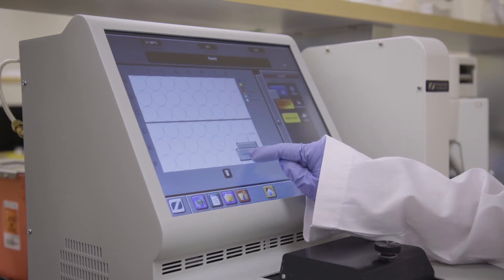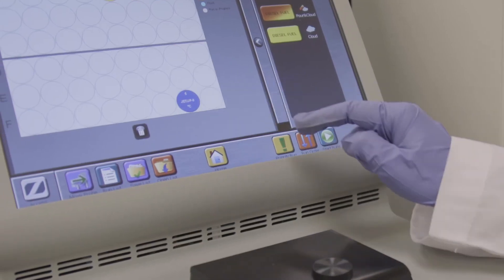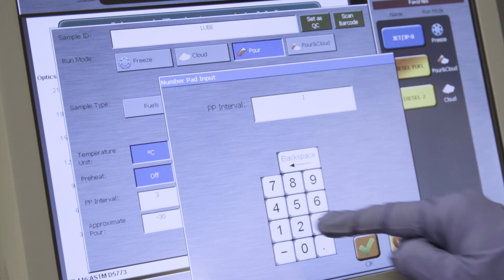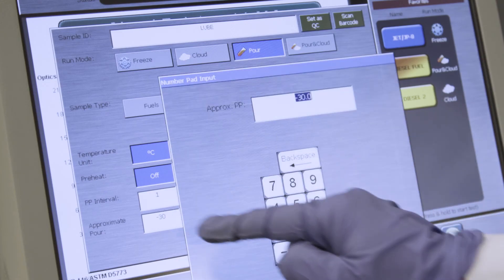Program test by dragging favorites buttons to the corresponding vial positions on the vial setup screen of the analyzer. Change sample ID and other test settings if desired.